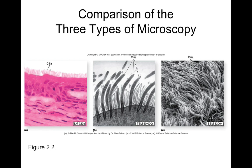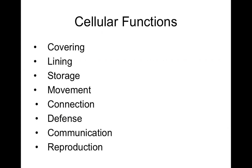There are more bacterial cells in your body than your own cells — which means you're mostly bacterial cells by number. Our cells are much larger than bacterial cells, but by number, bacterial cells outnumber your own, which is mind-blowing.